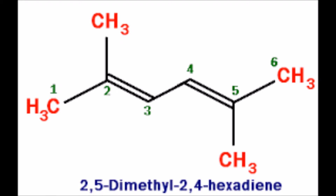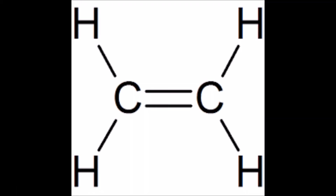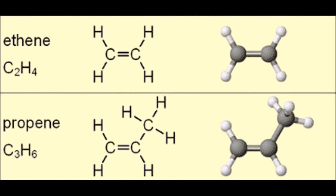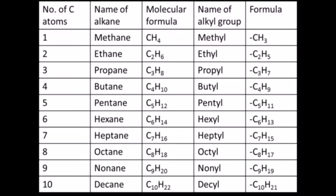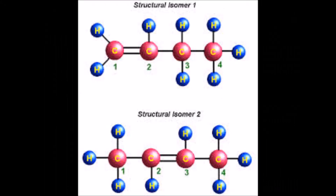Rule number two is to identify any side branches — these go before the longest chain. Rule number three is: if a side chain occurs more than once, indicate how many times it occurs. Also, alkanes have only single bonds, and the general formula is CnH2n+2. They always end with the prefix for the number of carbons. In examples for naming alkanes, we need to count the number of carbons on the largest chain, number each carbon in the parent chain, name the alkyl groups, and write the entire name.